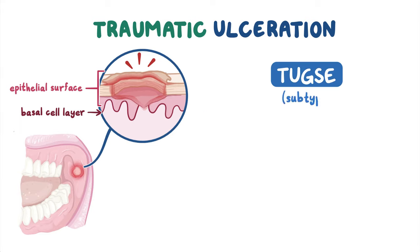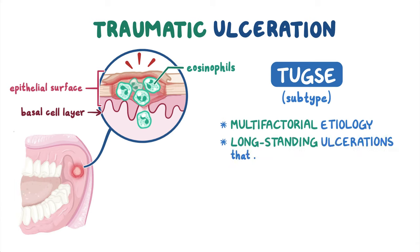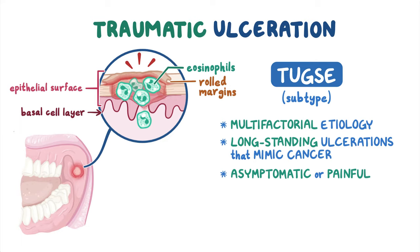TUGSE is a subtype defined by the presence of many eosinophils. Although its etiology is presumed to be traumatic, it is most likely multifactorial and has not been entirely elucidated. TUGSE presents as typically long-standing ulcerations mimicking oral cancer. Clinically, TUGSE may present as raised ulcerations with rolled margins that can either be asymptomatic or associated with pain.